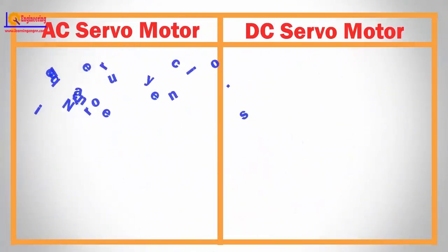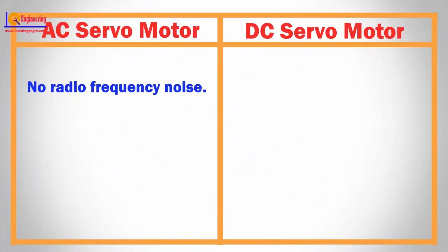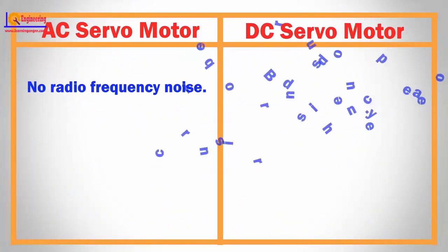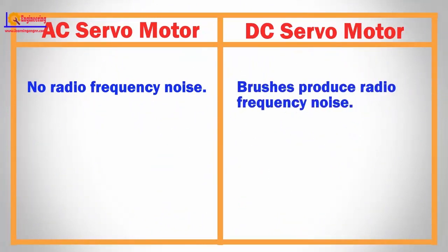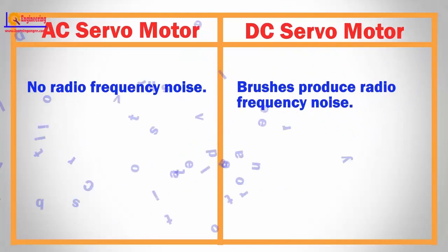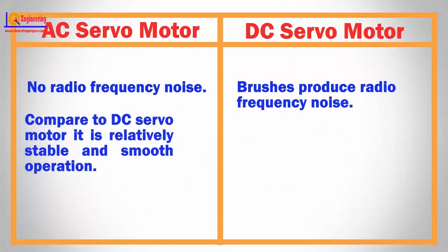There is no radio frequency noise in AC servo motors. In DC servo motors, brushes produce radio frequency noise. Compared to DC servo motors, AC servo motors offer relatively stable and smooth operation.